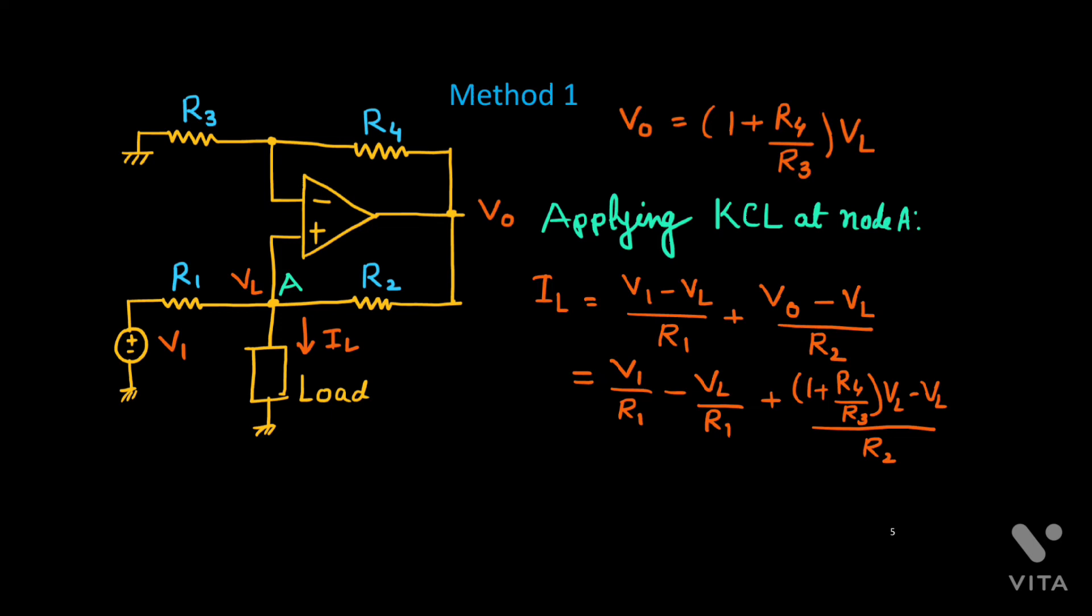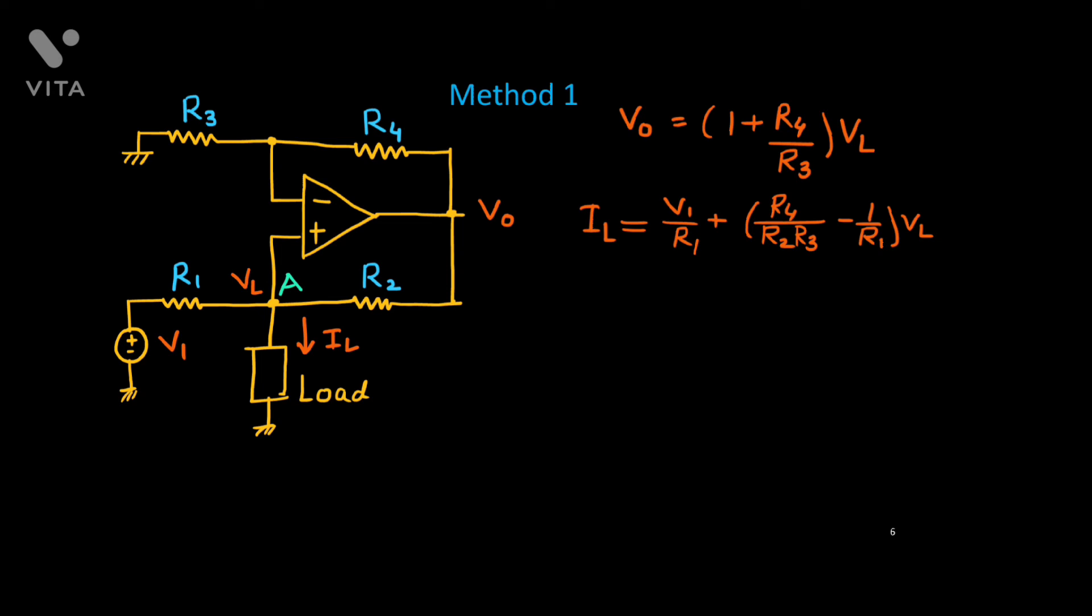The term will be V1 upon R1 minus VL upon R1 and here we have replaced V0. If you break this part you will see it is VL plus R4 upon R3 times VL minus VL. That VL and VL will cancel, so you will get here R4 upon R3 times VL only. Now we can combine these two together. You will get V1 upon R1 plus the term R4 upon R2 times R3 minus 1 upon R1 times VL. This is the expression for the current IL.